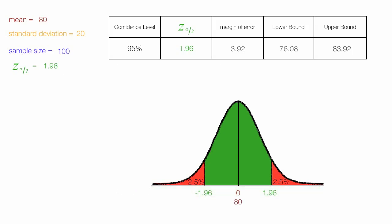80 is the mean, it's the value. 83.92 is the upper bound. And the lower bound is 76.08.